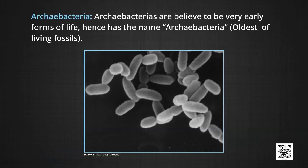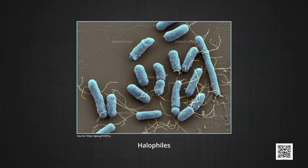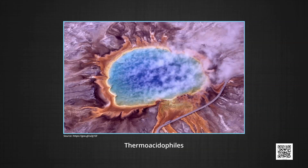Archibacteria are believed to be very early forms of life, hence the name archibacteria, meaning oldest living fossils. Due to the absence of peptidoglycan in their cell wall, they can live in extreme conditions of environment, and can be grouped under the following categories: halophiles — salty areas; thermoacidophiles — hot springs; and methanogens — marshy areas.